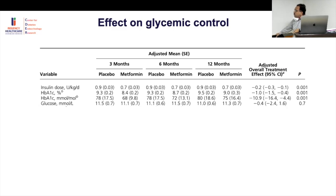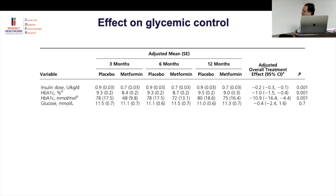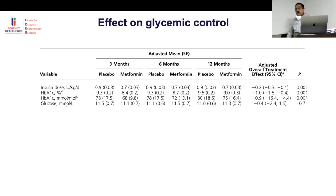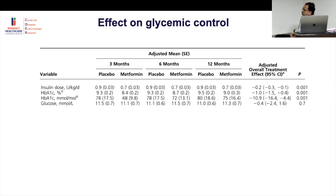For glycemic control, HbA1c came down by approximately 1% — notable because metformin typically causes about 1% reduction in type 2 diabetes; most type 1 studies don't show this magnitude. Insulin dose decreased by around 25% — from 0.9 to 0.7 units/kg. If HbA1c improves by 1% and insulin dose drops from 50 to 40 units, that is a clinically meaningful benefit, regardless of the FMD result.